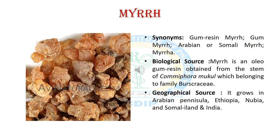Now we will discuss the fourth resin-containing crude drug, and it is Myrrh. The synonyms of Myrrh are gum resin myrrh, gum myrrh, Arabian or Somali myrrh. The biological source: it is an oleogum resin obtained from incision of the stem of Commiphora molmol, belonging to the Burseraceae family. The geographical source: it is found in Ethiopia, Nubia, Somali Island and India.